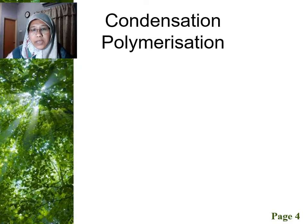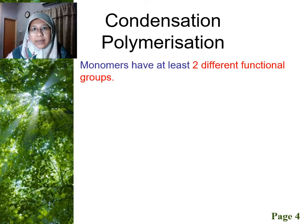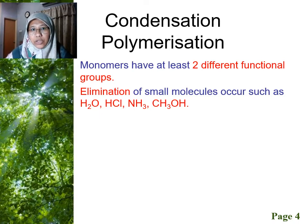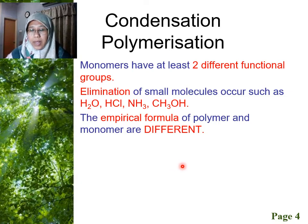Condensation polymerization uses carboxylic acid and its derivatives as reactants. That's why we are revising this topic in chapter 10. We can have one monomer with two different functional groups, or two monomers where each has a different functional group. This reaction involves elimination of small molecules, for example, H2O, hydrogen chloride, ammonia, or even methanol.